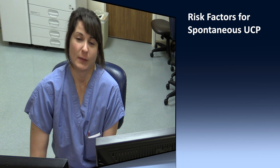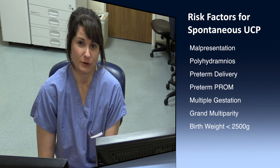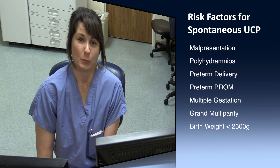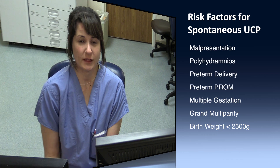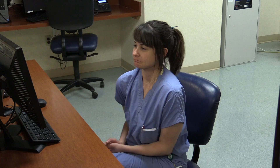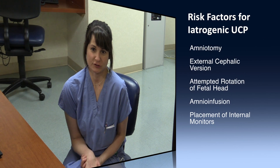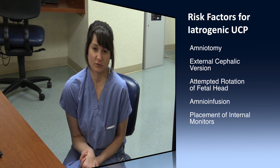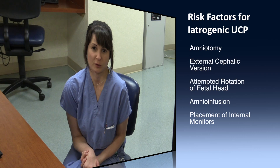Step 1: Identify risk factors. Spontaneous risk factors include malpresentation, polyhydramnios, preterm labor, PPROM, multiple gestations, grand multiparity, and birth weight less than 2500 grams. Iatrogenic risk factors include amniotomy, external cephalic version, attempted rotation of the fetal head, amnioinfusion, and placement of internal monitors.